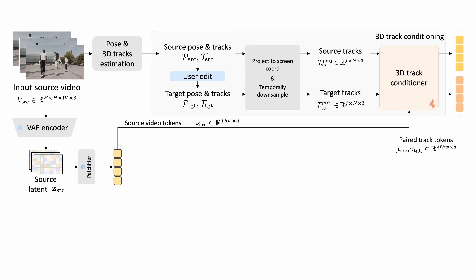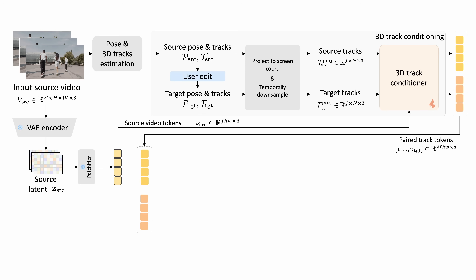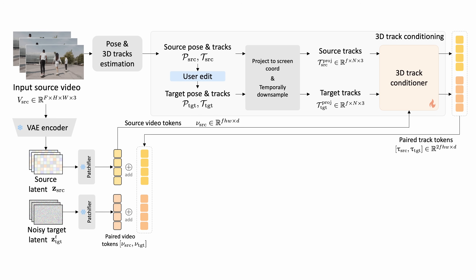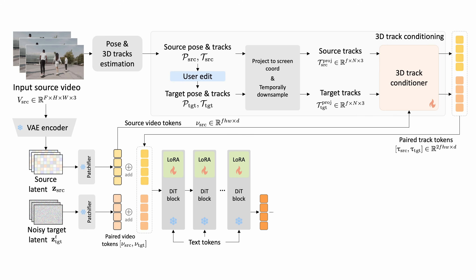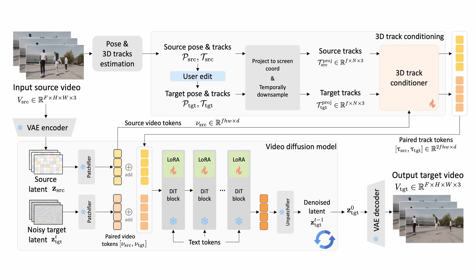This establishes correspondence between the two domains, giving us a pair of track tokens that have the same resolution as the source video latent. With this conditioning information, we are now ready to generate our target video using video diffusion. We initialize the target latent as pure Gaussian noise. In each denoising step, we take a noisy target latent ZT along with the conditioning latents into a series of transformer blocks to generate a less noisy latent. After multiple denoising steps, we can map the clean latent back to the target RGB video using a pre-trained decoder.